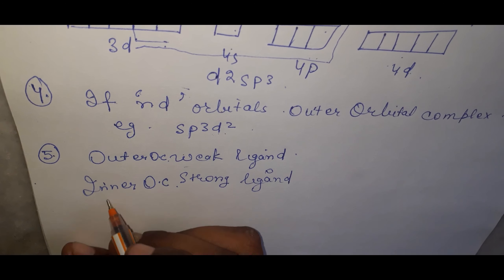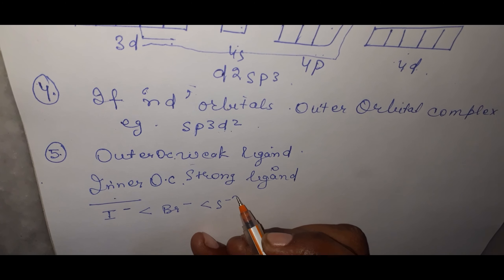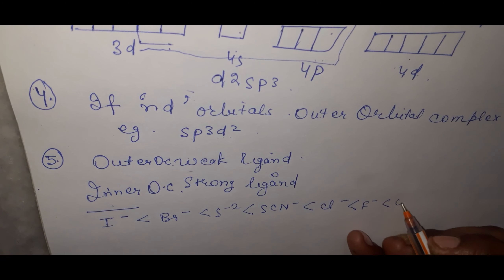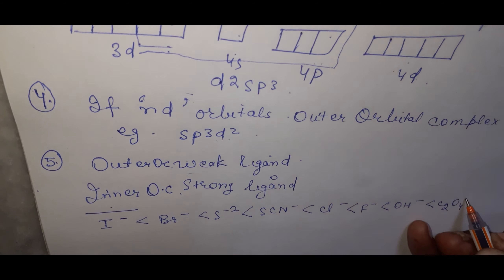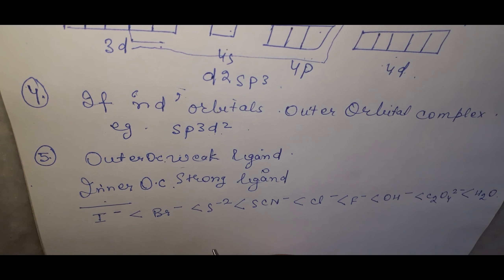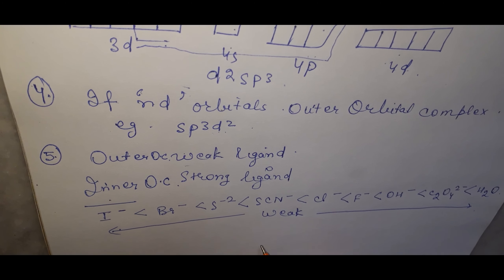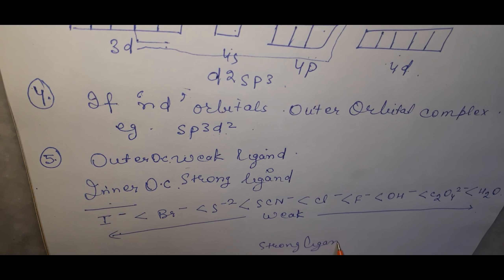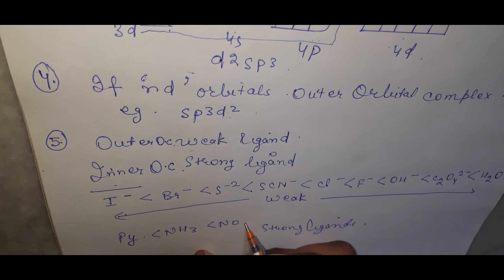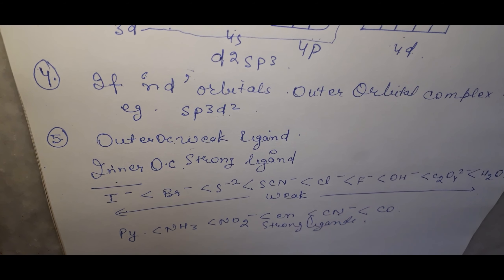Ligands are arranged in the spectrochemical series. Weak ligands include: I⁻, Br⁻, S²⁻, SCN⁻, Cl⁻, F⁻, OH⁻, C₂O₄²⁻, ethane-1,2-diamine (en), and H₂O. Strong ligands include: pyridine, NH₃, NO₂⁻, en, CN⁻, and CO (carbonyl).